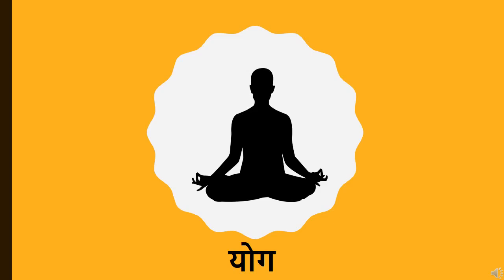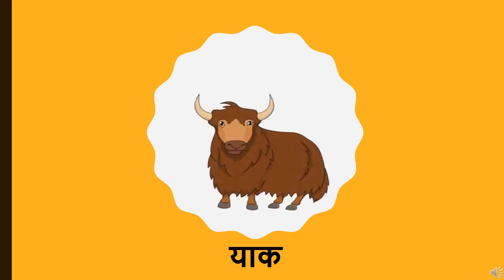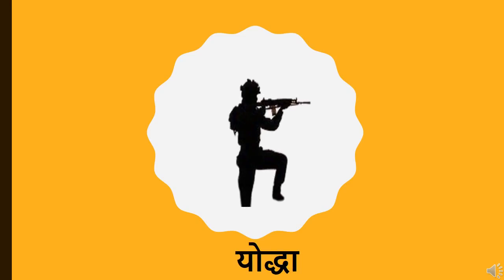Children, you all know we celebrate every year International Yoga Day. Y se Yatra — Yatra means to travel. You can see in the picture a family traveling somewhere, with luggage over there. Y se Yaak — Yaak is an animal you find in cold regions like the Himalayas or mountain regions. Y se Yodha — Yodha is a man who fights for his country.